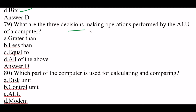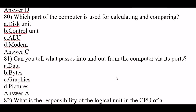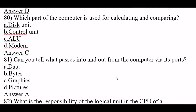Next question: what are the three decision-making operations performed by the ALU of a computer? The right answer is all of the above — greater than, less than, or equal to. These are very common operations performed by the ALU. Next question: what part of the computer is used for calculating and comparing? The answer is ALU. The ALU is used for calculating and comparing in the CPU.